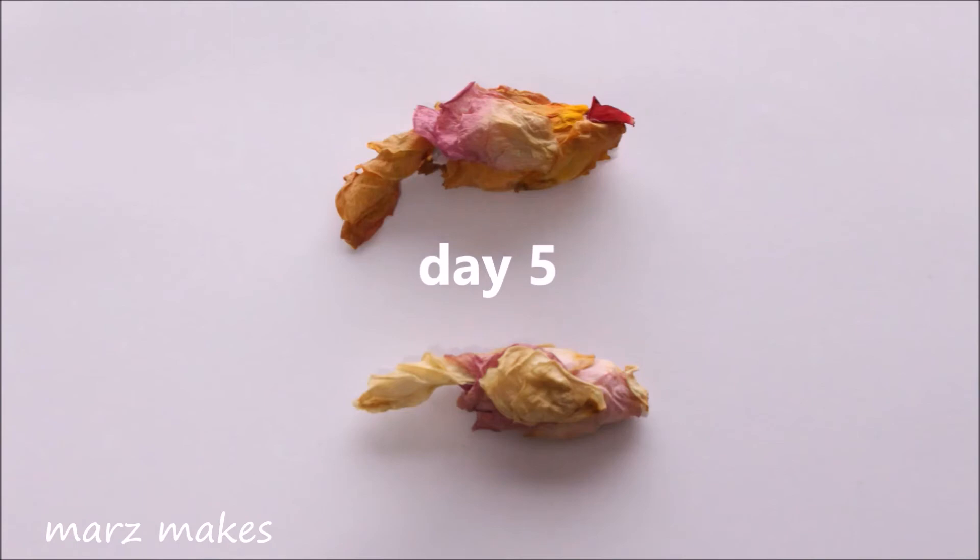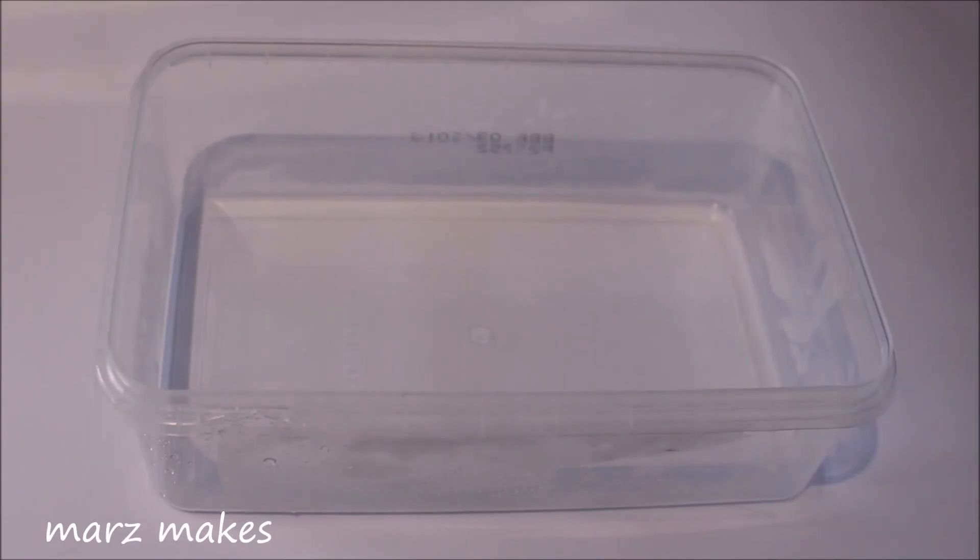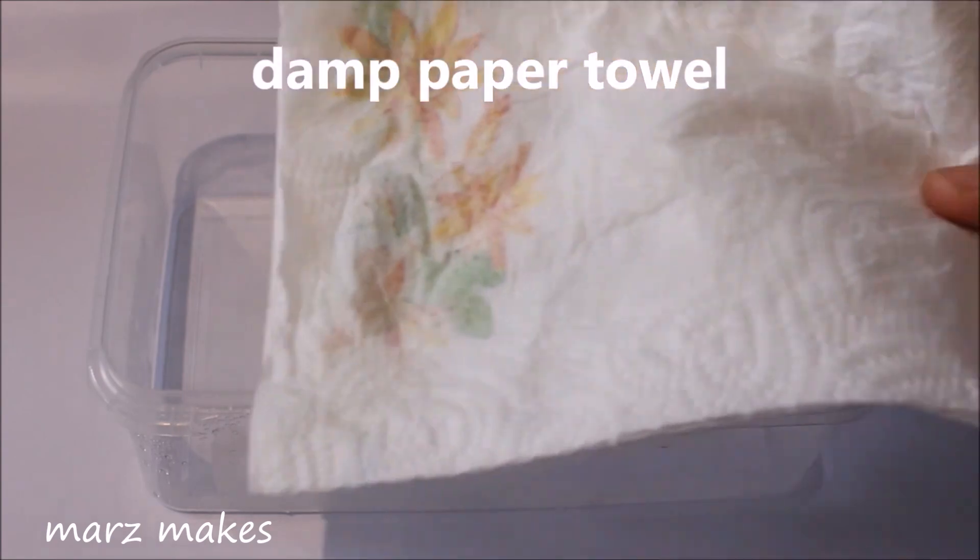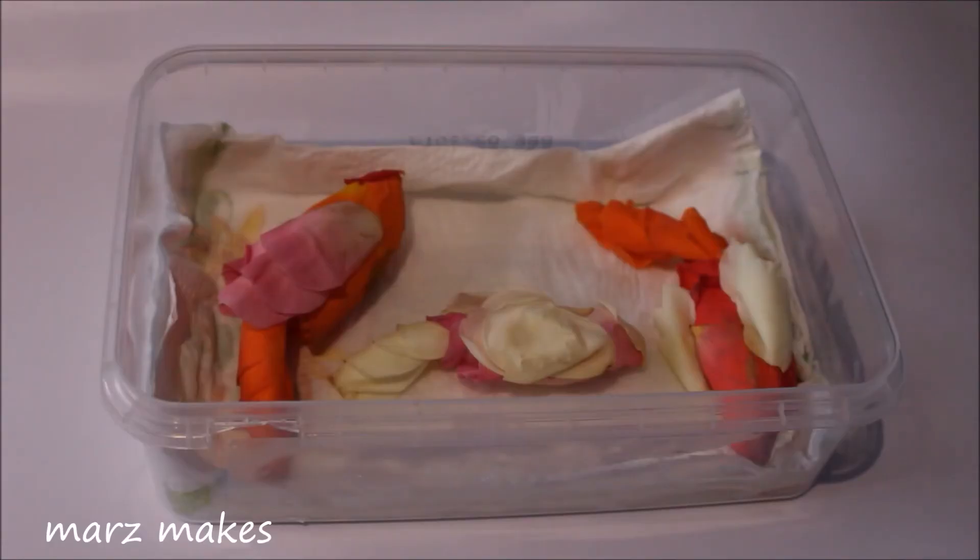You can store the fresh birds for 3-4 days by placing them in a sealed box with a damp kitchen towel and putting this in the fridge.